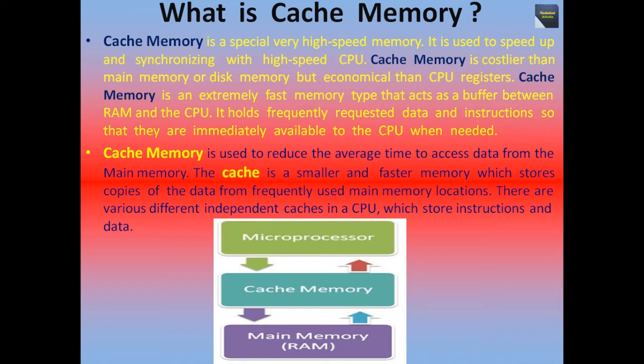Cache memory holds frequently requested data and instructions so that they are immediately available to the CPU when needed. It is used to reduce the average time to access data from the main memory. The cache is a smaller and faster memory which stores copies of data from frequently used main memory locations. There are various independent caches in a CPU which store instructions and data, and cache memory resides between the processor and the main memory.